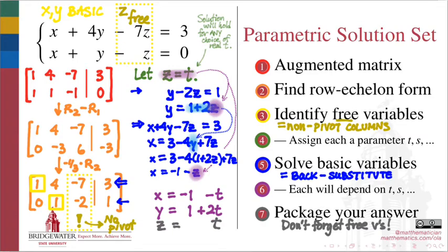This set of three equations constitutes a parametric description of the solution set for this linear system of equations. What that means is that any real number that I choose for t, if I substitute it into these three equations, will produce an x, a y, and a z that satisfy both of my original equations.